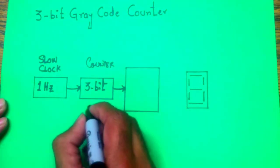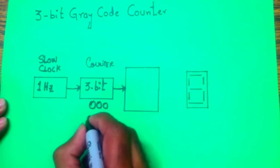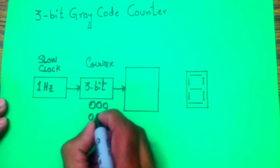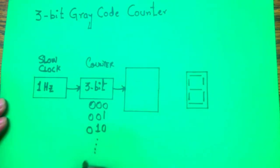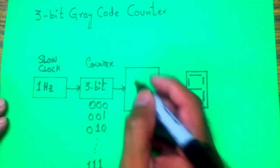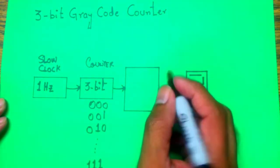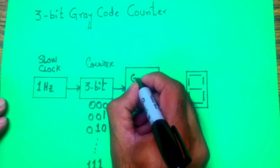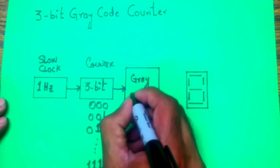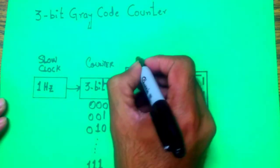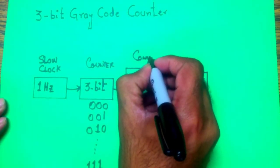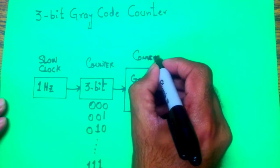Once it generates a count like 0 0 0, 0 0 1, 0 1 0, all the way to 1 1 1, for every binary number it generates a corresponding gray code. So we need one module that will do the conversion into the gray code.